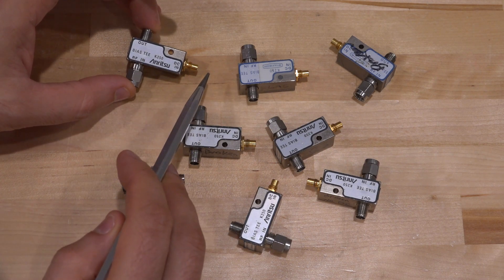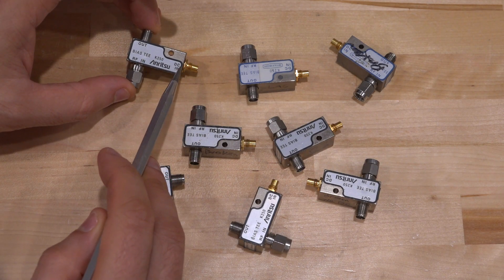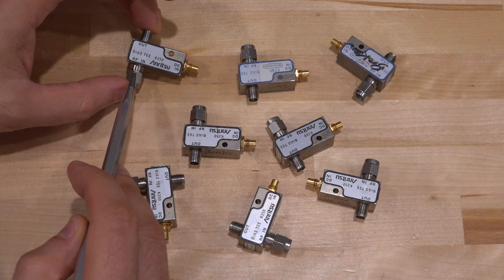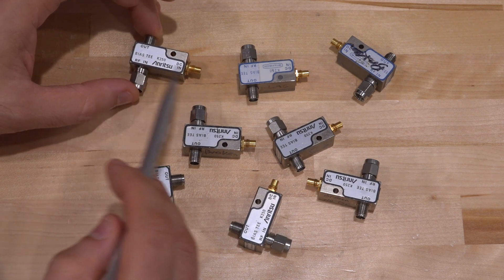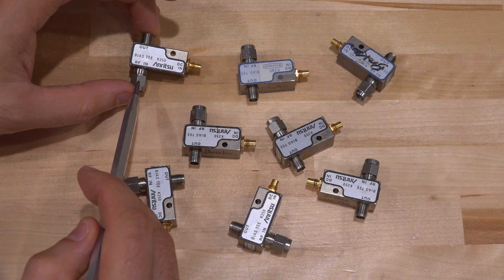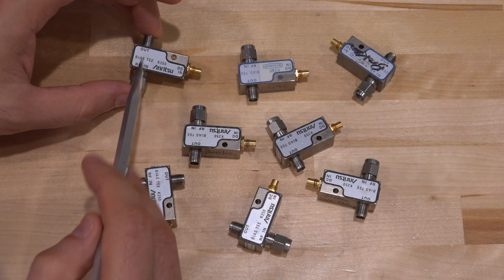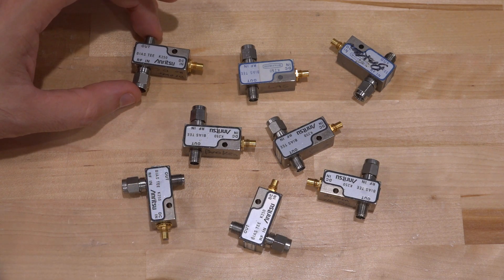And the role of a bias tee, as you know, is that you can apply a DC voltage, and it combines that with the AC signal on one port, but it blocks it on the other one. So it allows you to apply a DC voltage to one side of the circuit, but not on the other, and then they're also decoupled capacitively from each other.